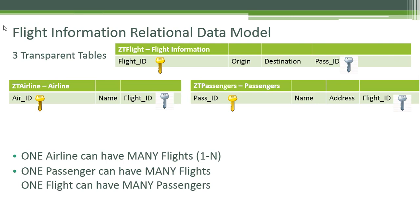Before moving on, I assume you have basic knowledge of databases and know what a primary key and a secondary key are in a table. We need to create three transparent tables for our relational data model. We will create a table to store the flight information with four fields: the flight ID acting as the primary key, the origin, the destination, and a passenger ID — which I will explain later — added as a secondary key.